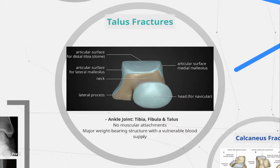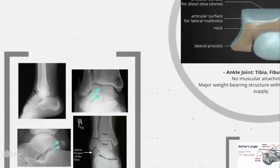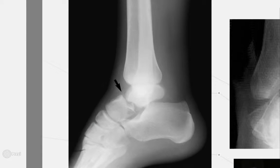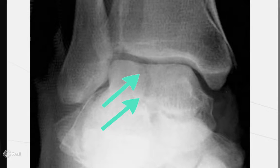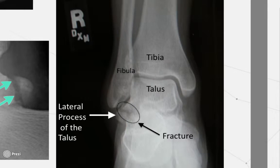The talus is a tarsal bone in the hindfoot that articulates with the tibia, fibula, calcaneus, and navicular bones. It has no muscular attachments and around 60% of its surface is covered by articular cartilage. The superior articular surface carries a greater load per unit area than any bone in the body. It has a vulnerable blood supply and a relatively common risk for post-traumatic avascular necrosis. Many talus fractures are subtle and easily missed; however, they can lead to long-term disability when there is disruption of the subtalar or talonavicular joints. X-rays shown include a fracture of the talar neck on lateral radiograph, a talar body fracture on AP radiograph, a posterior process fracture on lateral radiograph, and a lateral process fracture on AP radiograph.